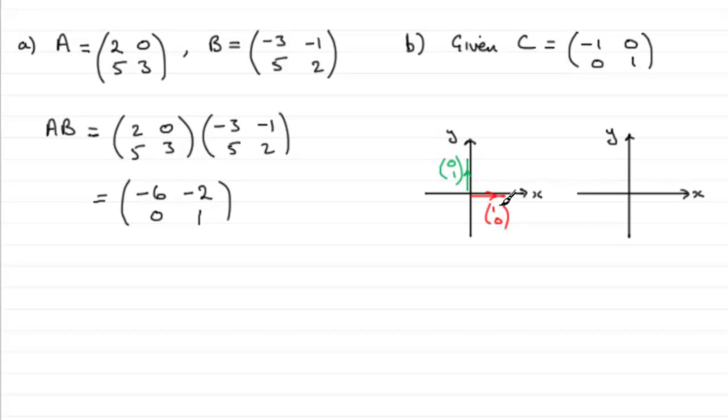Then I look at where these two vectors, starting with the x one here, where they go to when we do this matrix. Well, this one apparently goes to minus 1, 0, so I'll draw it in here, minus 1, 0.